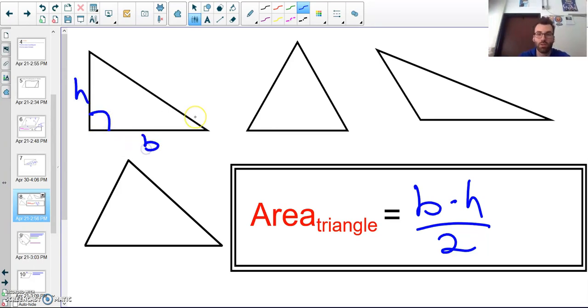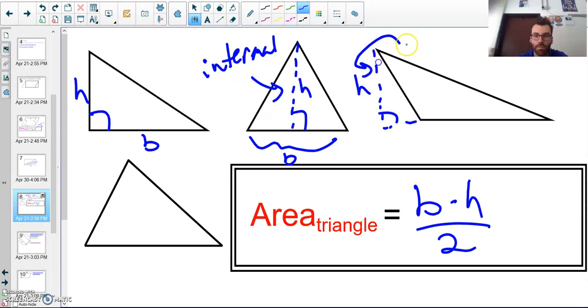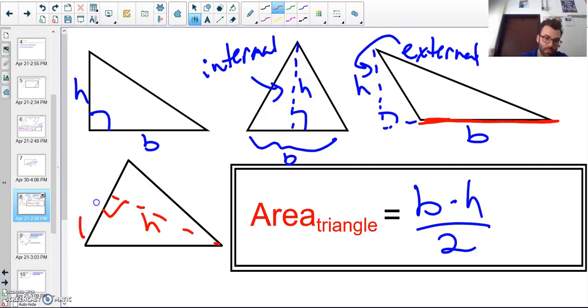Just like in a parallelogram, the height is perpendicular to the base. Here's an example of an internal height—internal because the height's on the inside. This would be an example of an external height. But I wouldn't include this piece for my base; I would just consider this part here to be the base. This is another example where that's my height and that would be considered the base. All of these are possibilities.